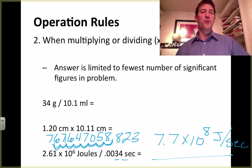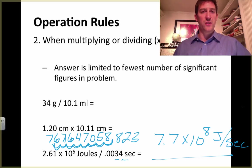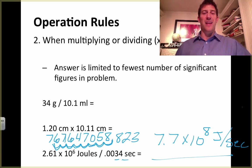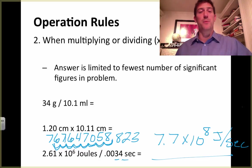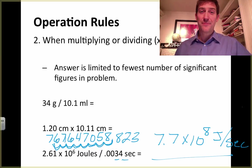So this is how you do significant figures or significant digits. Hopefully now you'll never have to ask how many places you're supposed to go after the decimal. You follow the three simple rules, the two operational rules, and you'll get this right every time. Good luck!